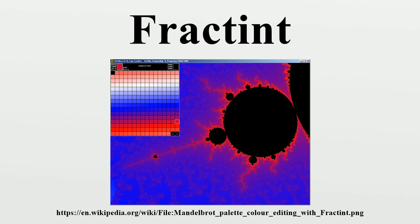The early versions of FRACT-386 were written by Bert Heiler, who based it on a Mandelbrot generator for a T-base processor that used integer math and decided to try programming something similar for his 386 machine. In February 1989, the program was renamed Fractint.